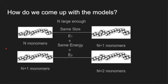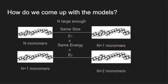Now, here comes the important part. How do we come up with the models? Since the amount of monomers in one polymer is huge, polymers' real size remains the same if one adds another monomer to the polymer. Due to this independency relation between polymers' size and their monomers, the energy required in the polymerization process for marginal individuals are almost identical when the chain is long enough.